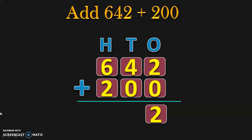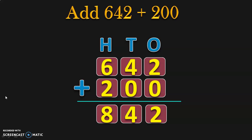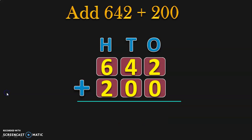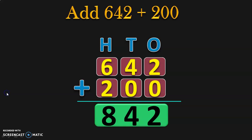You have learned about this property in class 1 itself. Next, move on to the tens place: 4 plus 0 gives you 4. Then move on to the hundreds place: 6 plus 2 gives you 8. So the sum of 642 plus 200 gives you the answer 842. Let us do the next example.